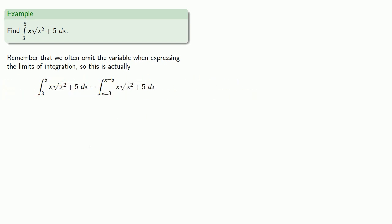Why does that matter? Well, since we made the substitution u equals x squared plus 5, then when x is equal to 3, then u is equal to 14, and when x is equal to 5, u is equal to 30. And that means when I make my u substitution...